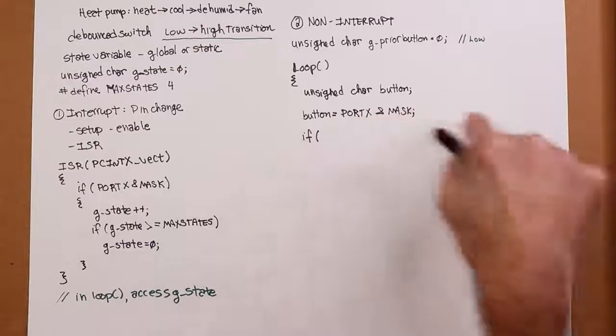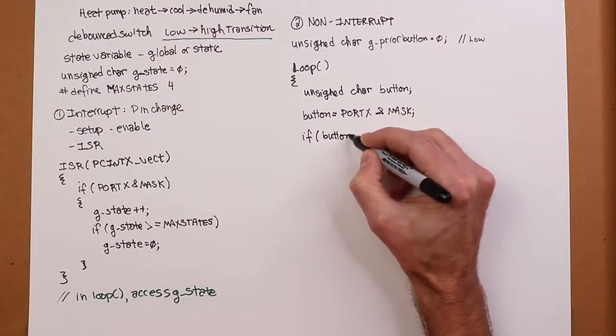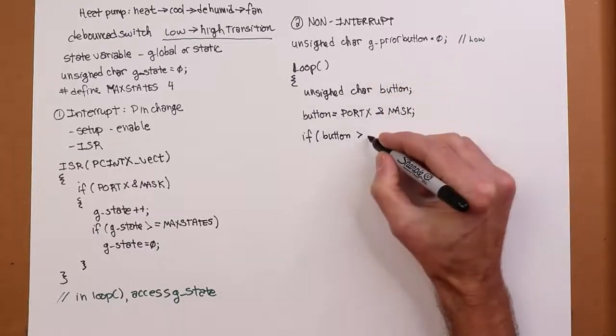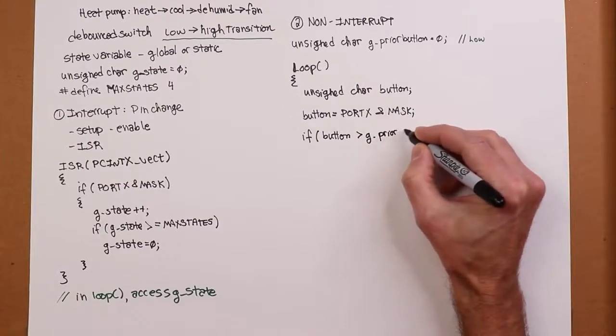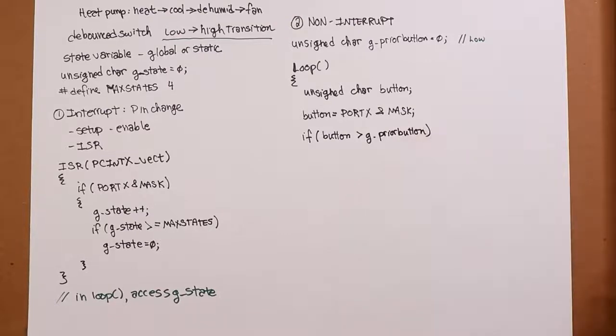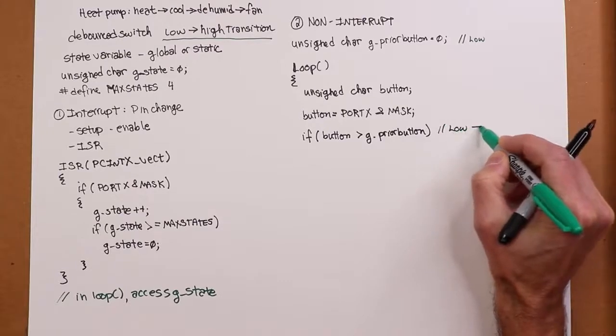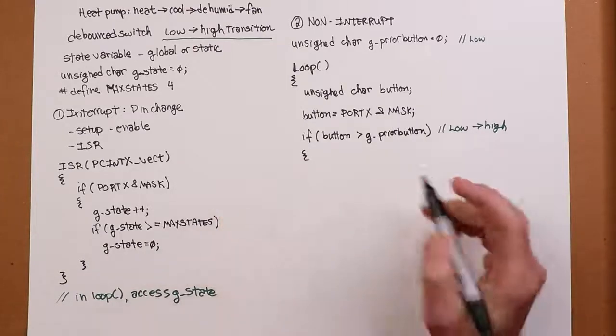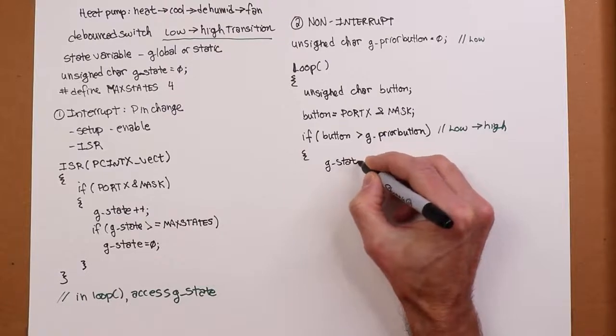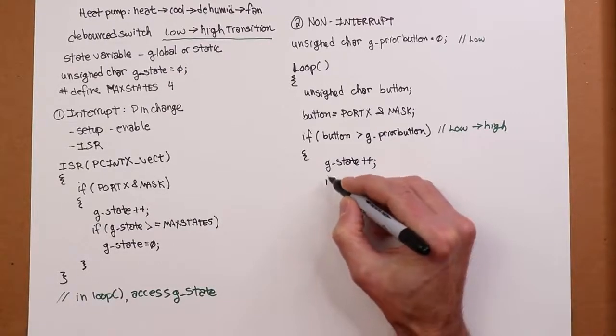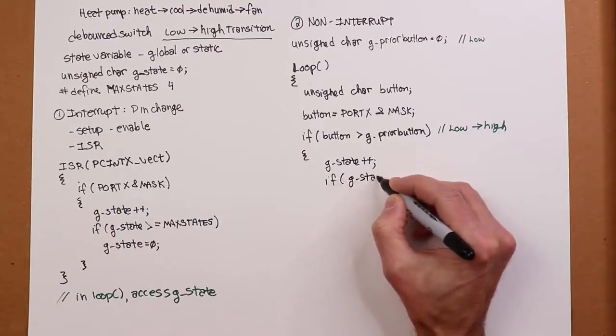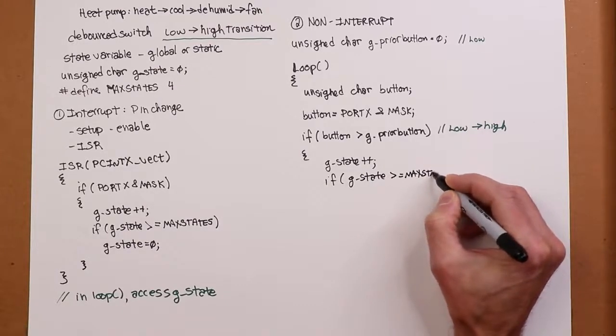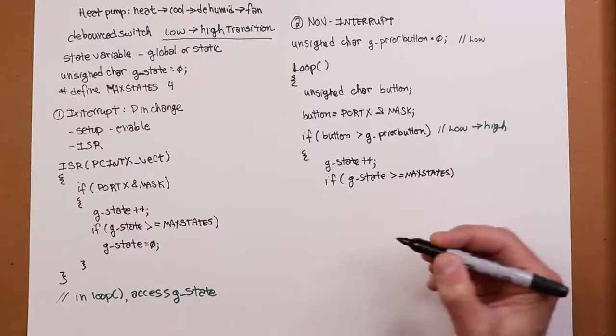So I take a look at port x, whatever port I'm using, and that with the appropriate bit mask just like we did before. So if it's depressed, then button is going to be non-zero. It's going to be high. So if current value of button is greater than the prior button, which was zero, then we know this must be a low-to-high transition. There's other ways you could word this, but this is a simple way to do it. So I have a low-to-high transition. What do I do? Well, basically the same thing I did before. In other words, increment g_state, check to see if g_state's out of bounds, like we did before. If it is, you know, reset it, cycle it back to zero.